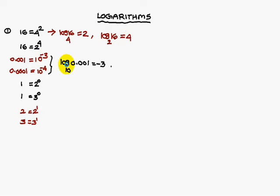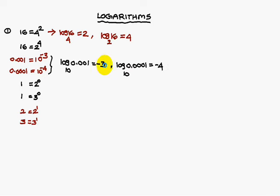Similarly, log 0.001 base 10 is the power minus 3. And log 0.0001 base 10 is nothing but the power minus 4. If you observe, the logarithm of these numbers gives negative values — minus 3 and minus 4.